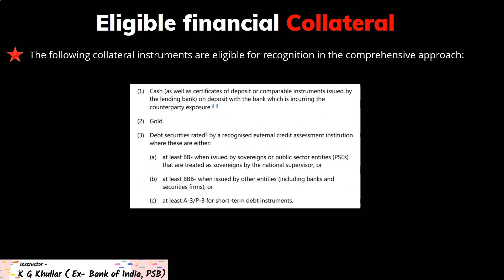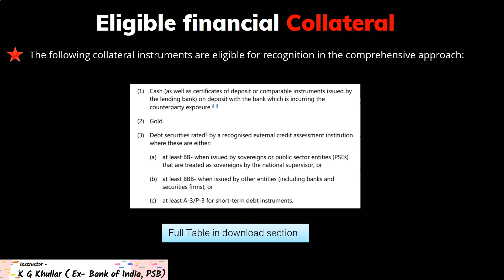Let's see eligible financial collateral. The following collateral instruments are eligible for recognition in the comprehensive approach: first is cash, second is gold, and third is debt securities rated by a recognized external credit assessment institution. This is a long table and I have attached a PDF of this table along with this lecture — you can download it and keep it for your reference.